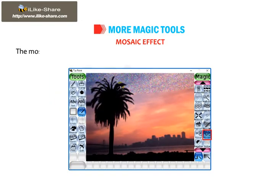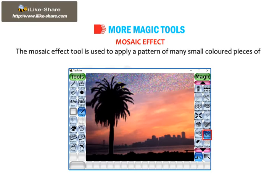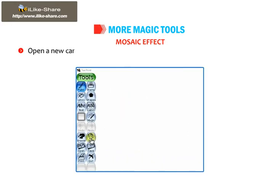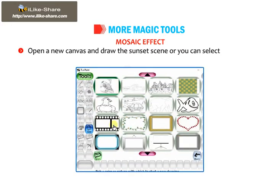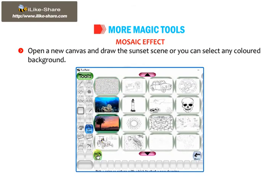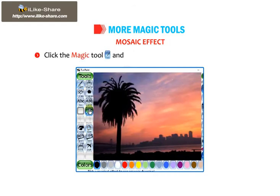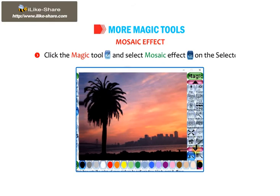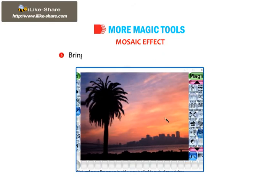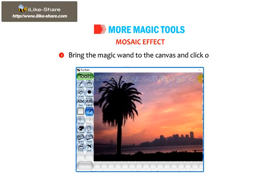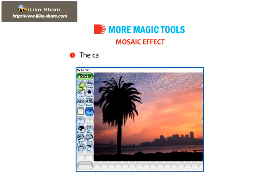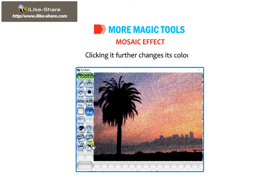Now, let us talk about the mosaic effect first. The mosaic effect tool is used to apply a pattern of many small colored pieces of stones on the canvas. Open a new canvas and draw the sunset scene or you can select any colored background. Click the magic tool and select mosaic effect on the selector. Bring the magic wand to the canvas and click on it. The canvas will be filled with mosaic effect. Clicking it further changes its color.